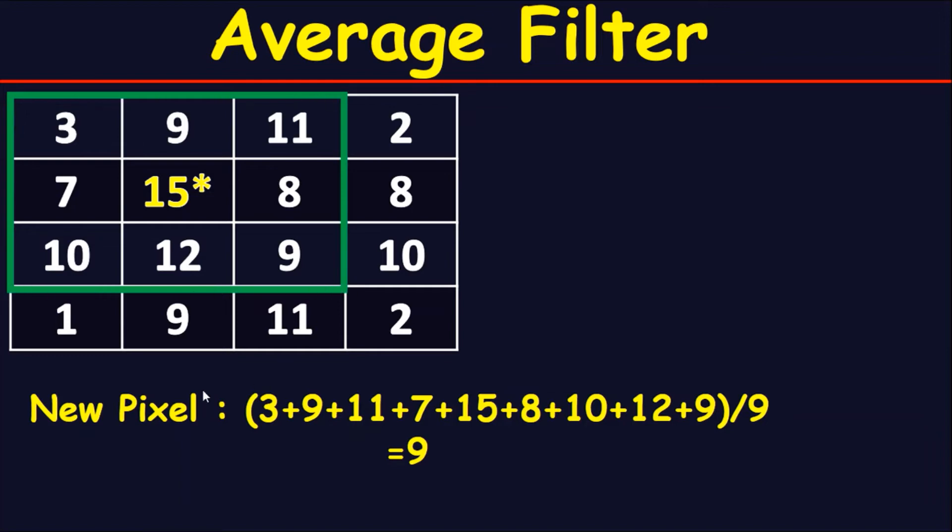To get the new pixel, you should add the elements in this 3x3 matrix: 3 plus 9 plus 11 plus 7 plus 15 plus 8 plus 10 plus 12 plus 9, then you divide by the number of pixels.